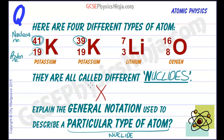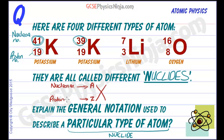At the top we have a letter called A, which stands for the nucleon number. At the bottom we have a symbol called Z, which stands for the proton number. So this is just a general notation for any element or any nuclide with a nucleon number of A and a proton number of Z.